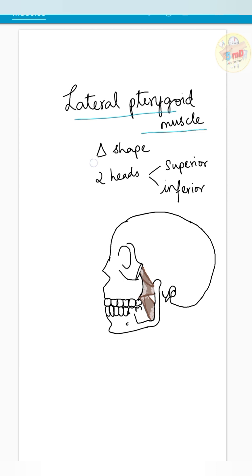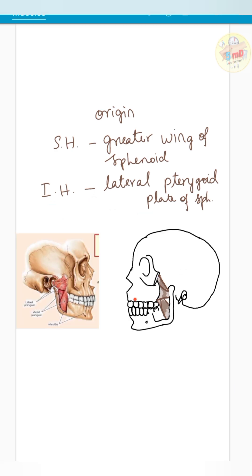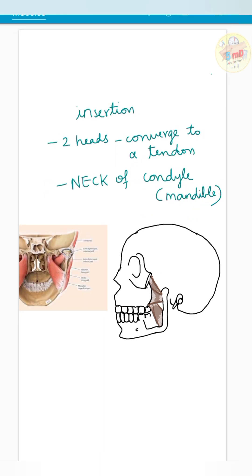The lateral pterygoid muscle is triangular in shape and has two heads: superior and inferior. The superior head originates from the greater wing of the sphenoid, and the inferior head originates from the lateral surface of the lateral pterygoid plate. Both heads converge to form a tendon and get inserted into the neck of the condyle.